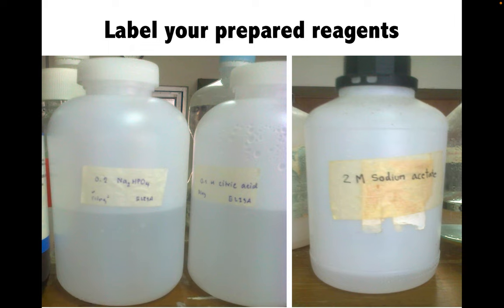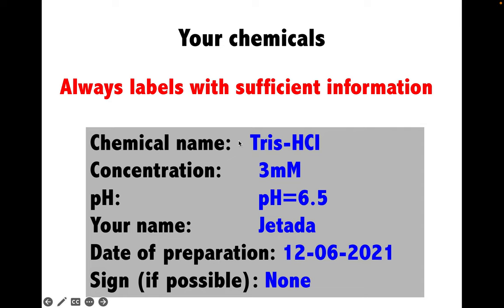Another common issue in laboratories worldwide is the labelling of prepared reagents. You might normally write only brief details like '2 molar sodium acetate' — but is this enough? Definitely not. Here are the full details recommended for labelling: chemical name, concentration, pH, who prepared it and when it was prepared, and any relevant hazard signs or symbols.